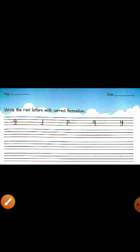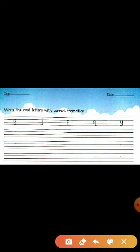Now we will write root letters with correct formation. Starting point, write dot se start kerna hai. G again and again, G, G. J, J, J, J, J. Niche ki three lines pe likhna hai. P, P, P, P. Q, Q, Q. Y, Y, Y, Y. I think you all have done right formation.